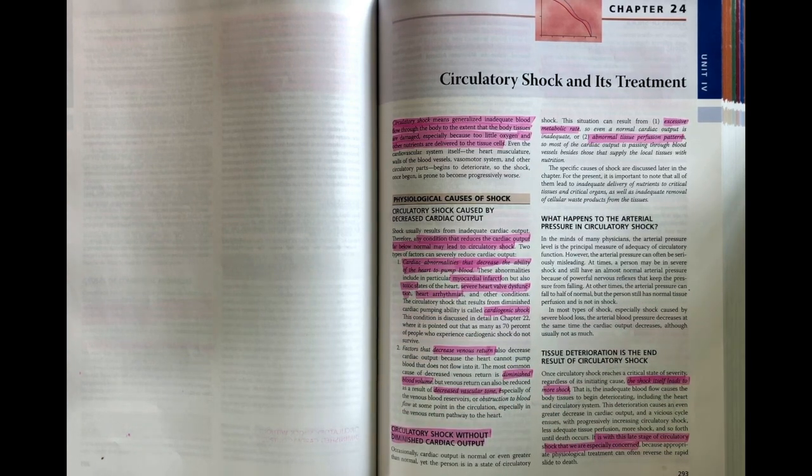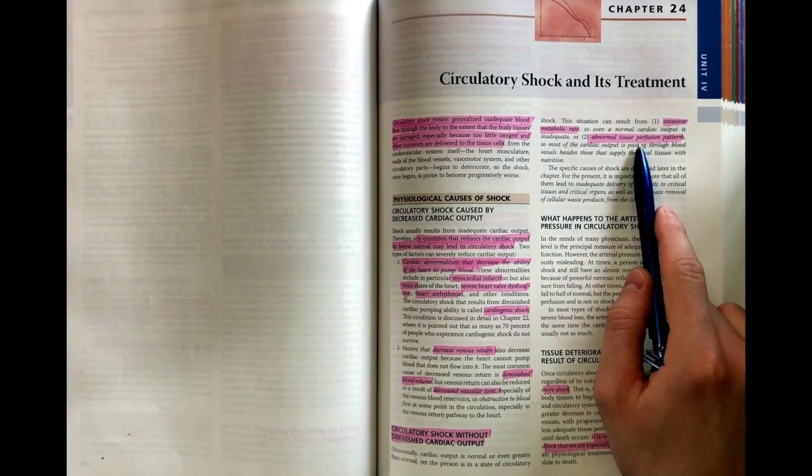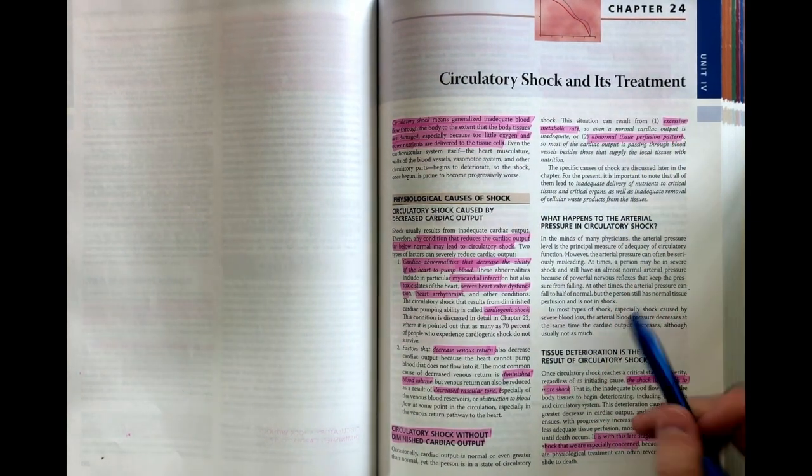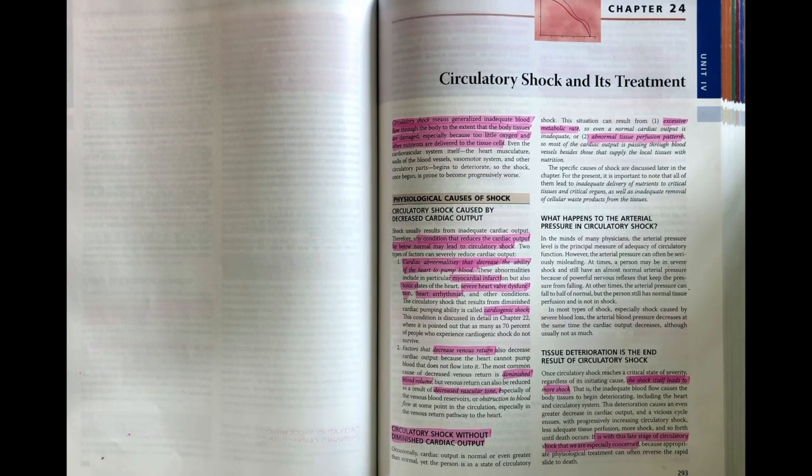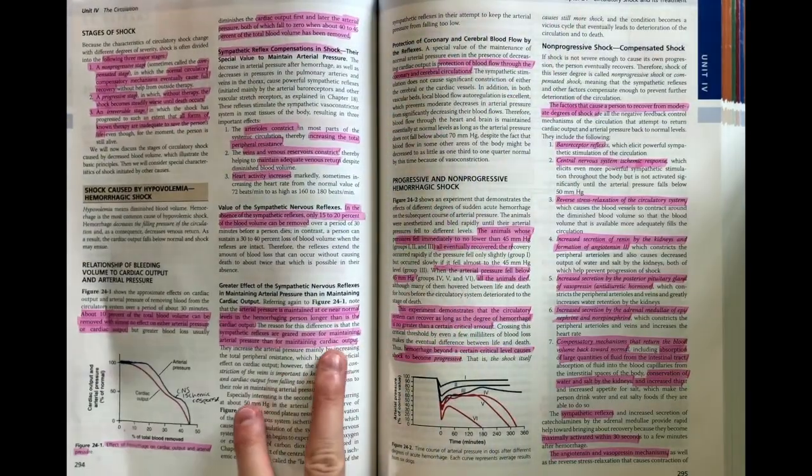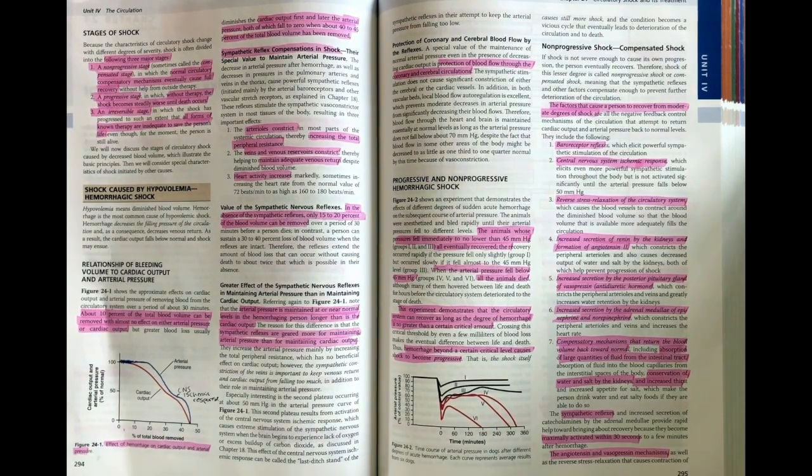However, you can also have circulatory shock without a reduced cardiac output because of reasons such as an excessive metabolic rate or abnormal tissue perfusion patterns. During circulatory shock, we get a reduction in blood pressure. Ultimately, the reduction in blood pressure leads to even more shock because it reduces the perfusion to the heart. The heart then becomes dysfunctional, and now the heart starts to stop working as well. There is a vicious cycle to shock where, if it's not treated or corrected, shock will eventually lead to death.